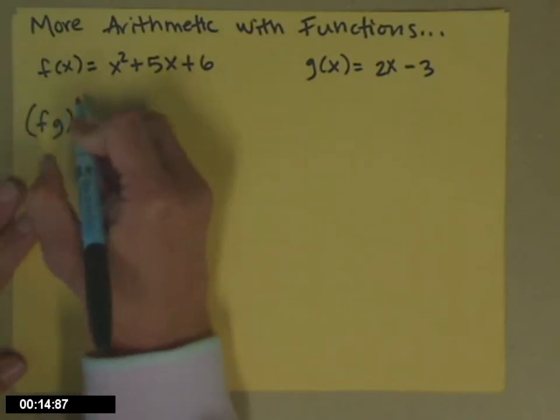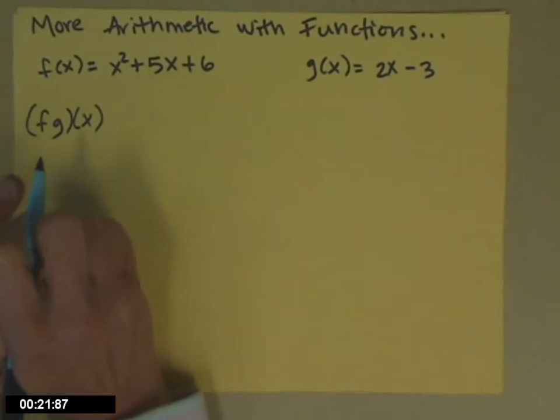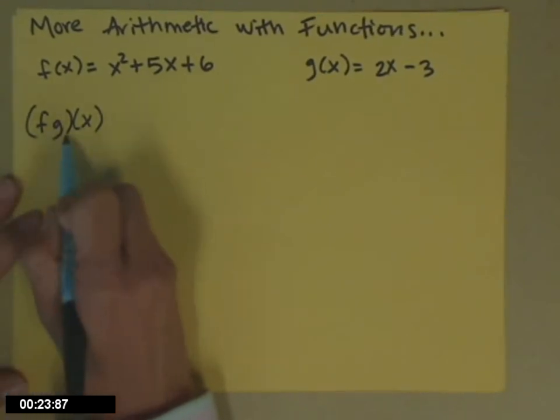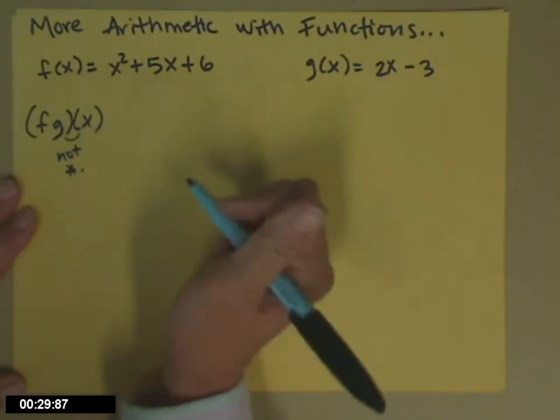The notation for the new function is just the f and g together, nothing in between them. We're using proximity here to indicate multiplication. Between this and the x though, that is not multiplication. That's just showing us that x is our variable.